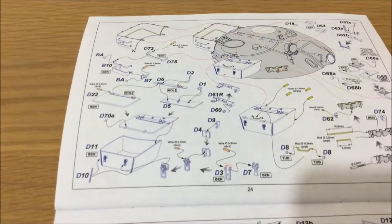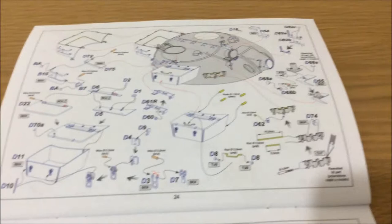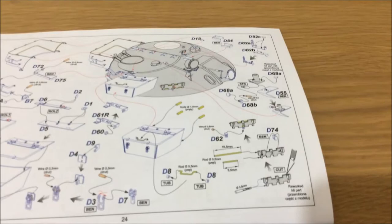Here we have the side bin that goes next to the loader's hatch and some parts to fit the track onto the side of the turret.